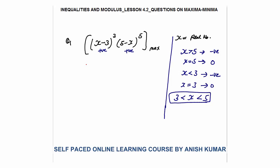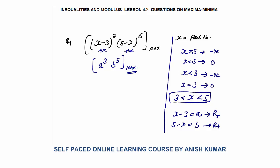Let me assume x minus 3 as a and 5 minus x as b. Since x is between 3 and 5, both a and b are positive real numbers. Also, a plus b equals (x minus 3) plus (5 minus x), which simplifies to 2. So I need to find the maximum value of a cubed times b to the power 5, given that a and b are positive real numbers with a + b = 2.